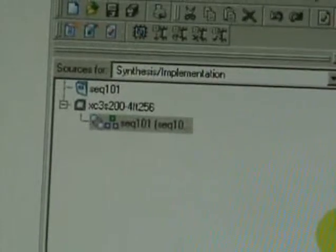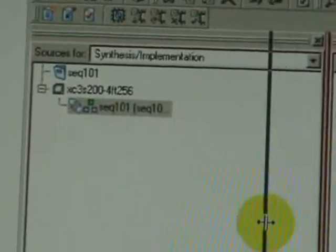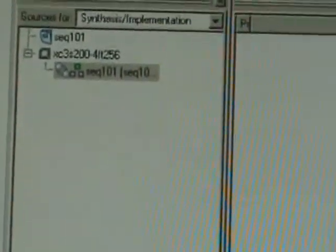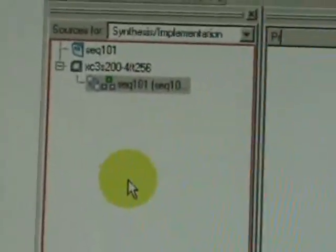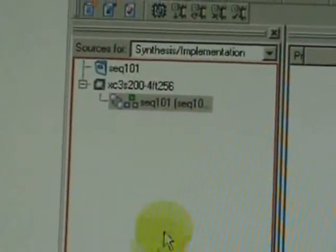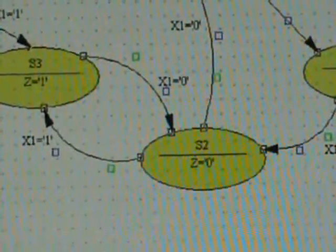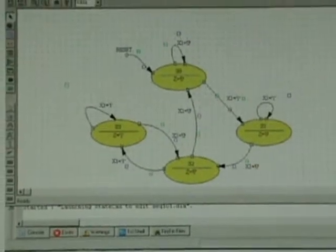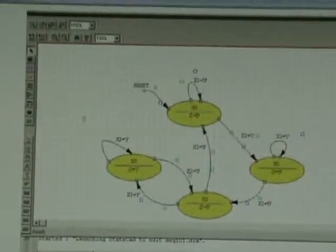The project is now started. It has initialized. And let me double-click that. It opens up the source that I have specified, which is so-called state diagram.